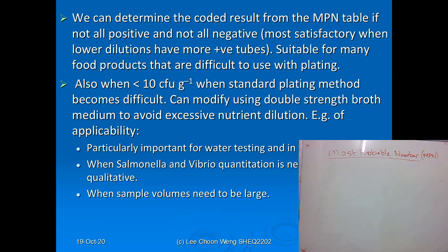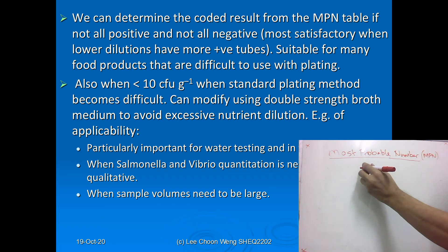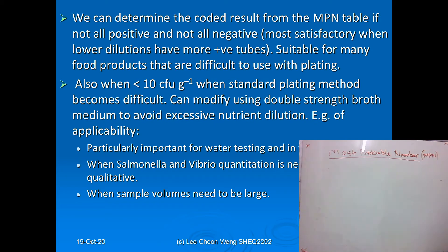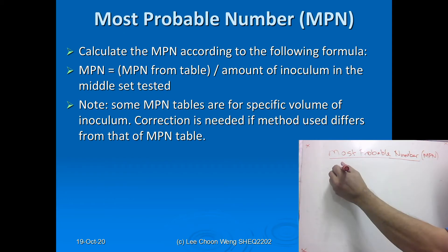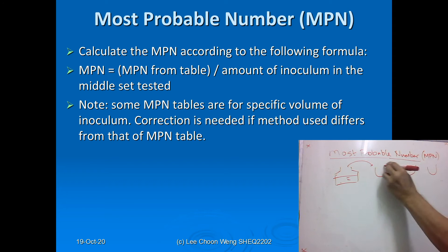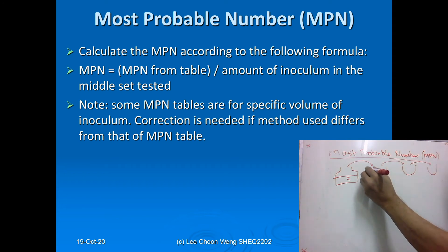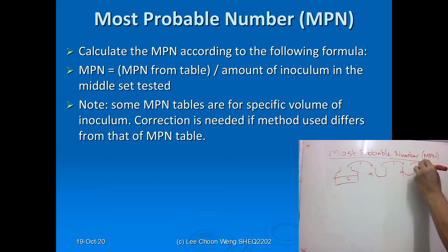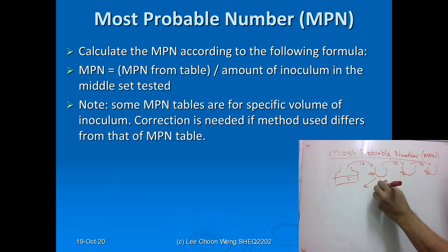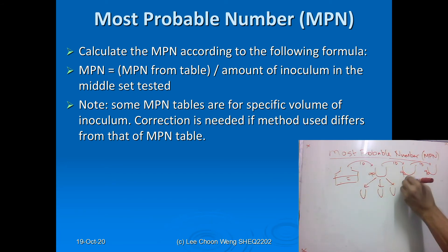MPN is very useful in water testing for microbiology, and when samples have to be large. You take a sample, dilute it with a 10-times dilution, and then further inoculate into your MPN tubes.